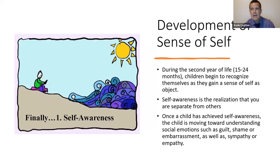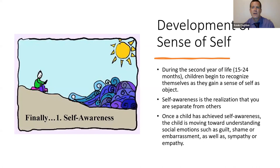The development of the sense of self: during the second year of life — 15 to 24 months — children begin to recognize themselves as they gain a sense of self as a social object, an awareness of oneself, a sense that you are separate from the rest of the world — very much left-brain processes. Self-awareness is the realization that you are separate from others, and this is a uniquely human experience. Not many animals can do this — elephants and maybe dolphins also — but it's very rare on this planet.